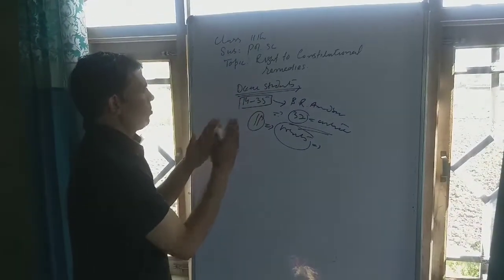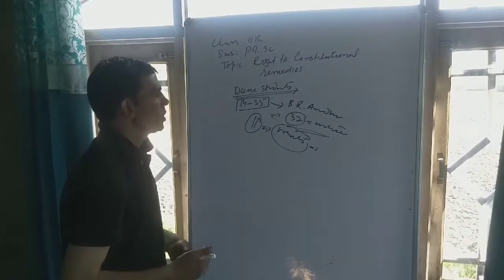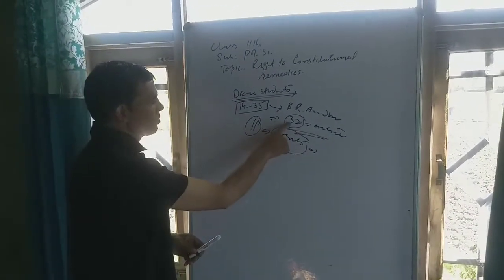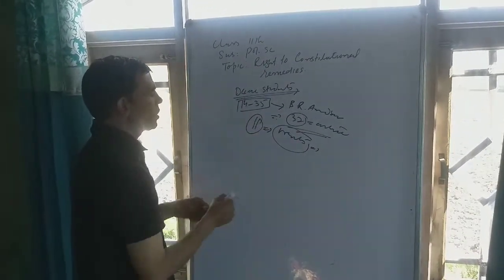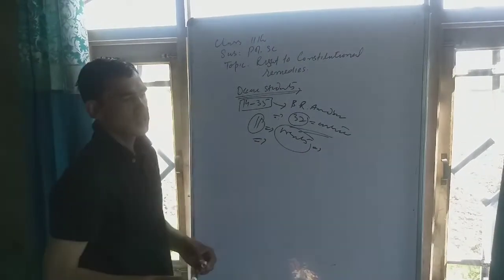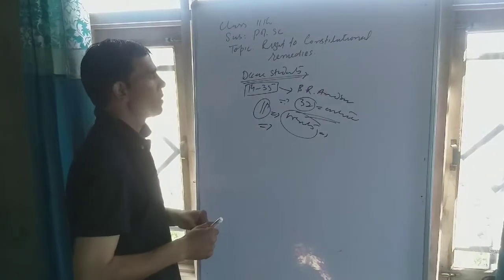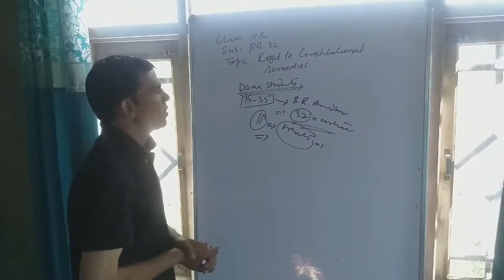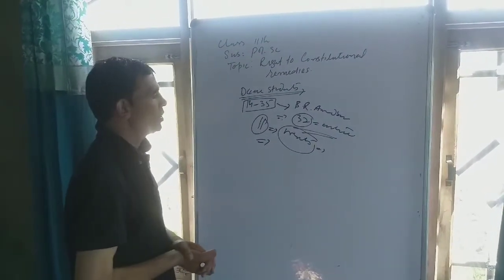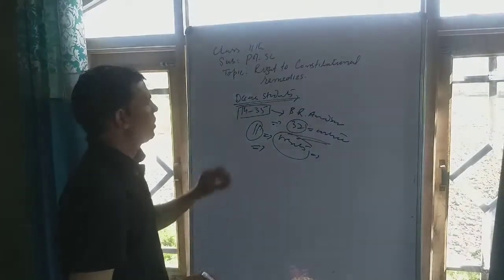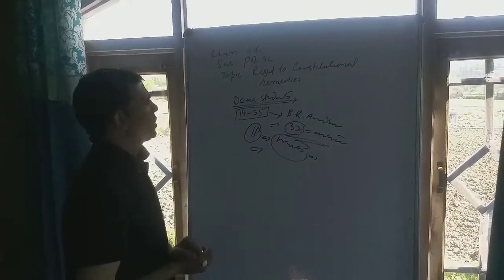So briefly, right to constitutional remedies is well mentioned in article 32 of the Indian Constitution. It safeguards the rest of the rights that we enjoy under our constitution from article 14 to 35. So it is a very important right in our constitution.